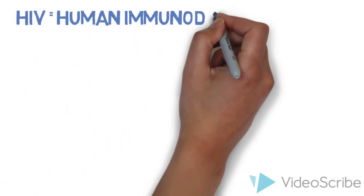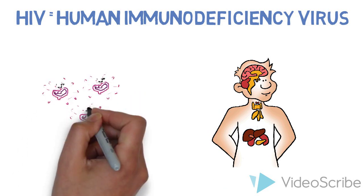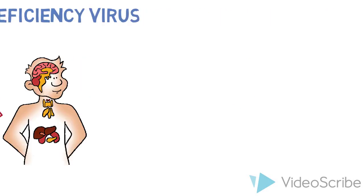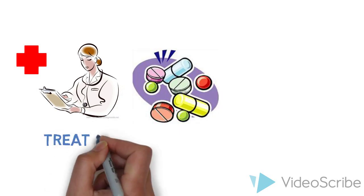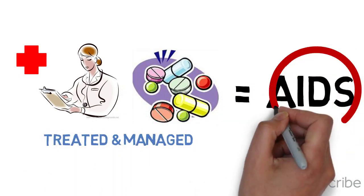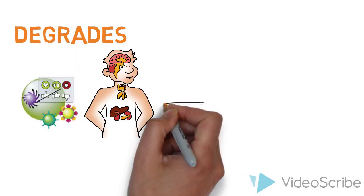HIV, also known as the Human Immunodeficiency Virus, is a virus that targets the immune system, leaving room for infections to take place. Currently, there is no cure for HIV once an infection is established. However, HIV can be treated and managed to prevent the manifestation of AIDS, which eventually degrades the immune system to a point where any infection can be fatal.